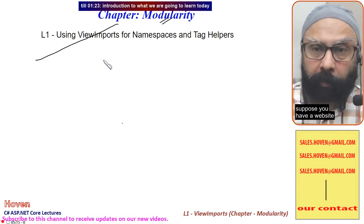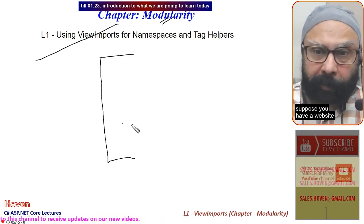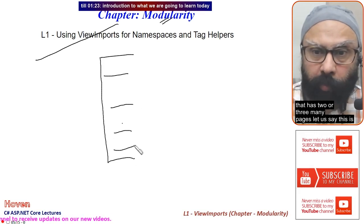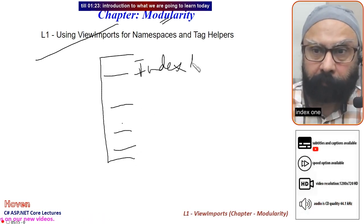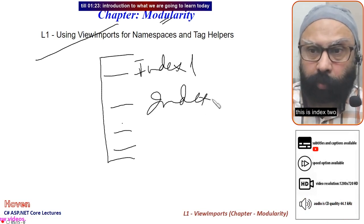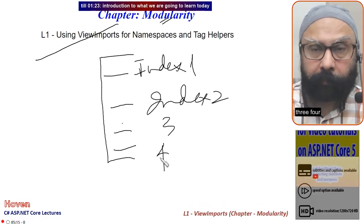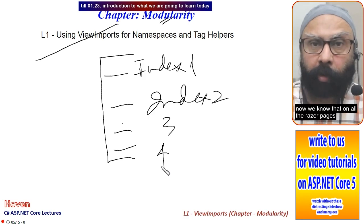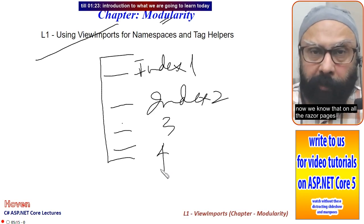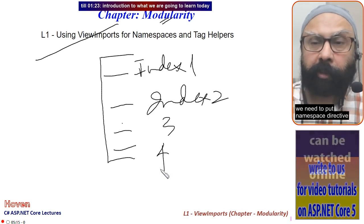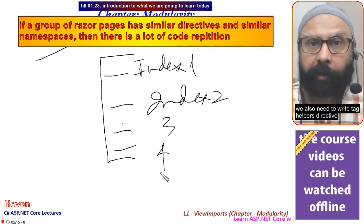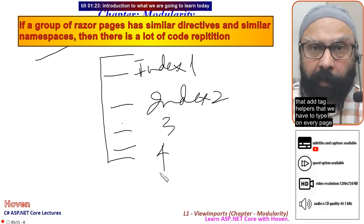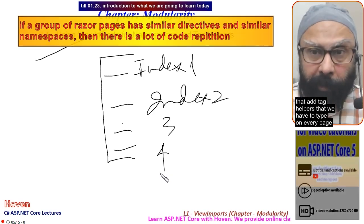Suppose you have a website that has two or three many pages — index 1, index 2, 3, 4. We know that on all the Razor pages we need to put a namespace directive, and we also need to write a tag helpers directive that we have to type on every page.